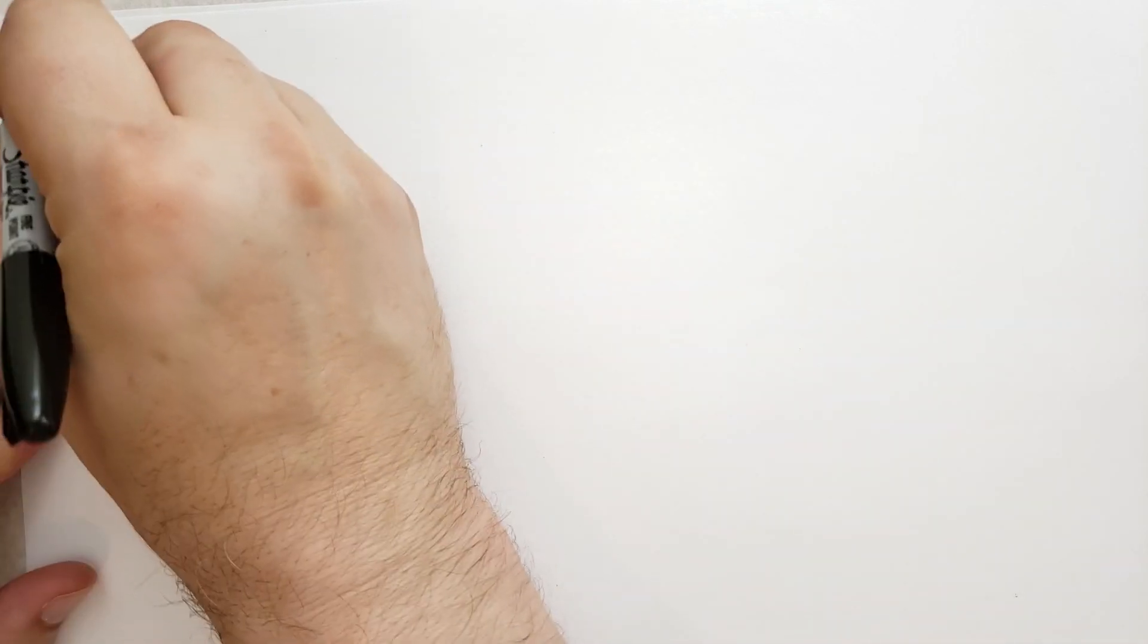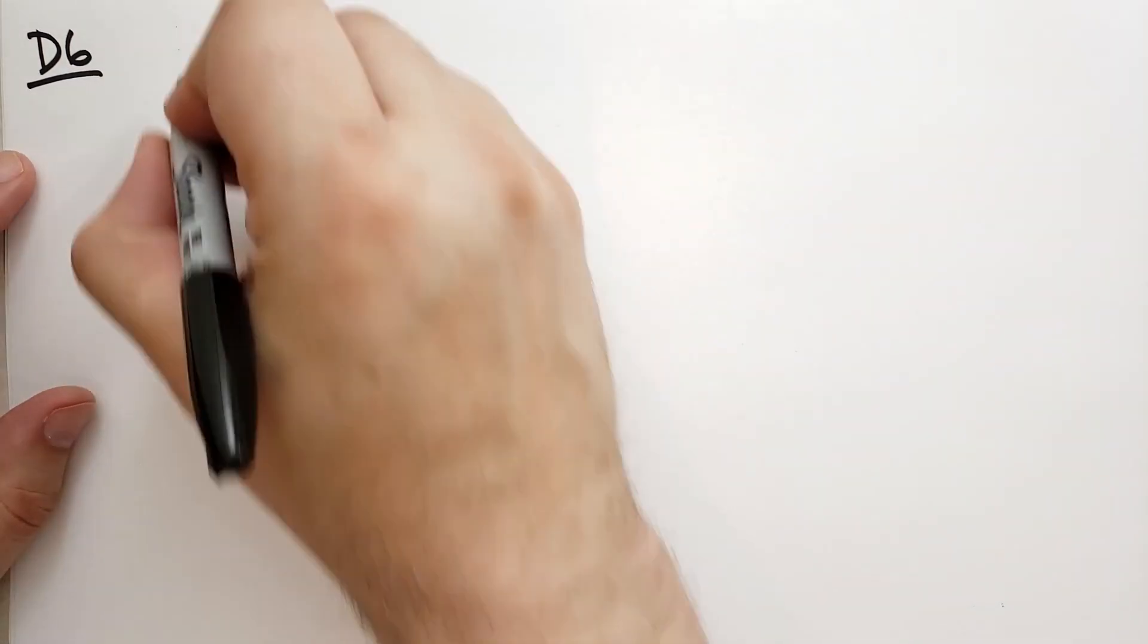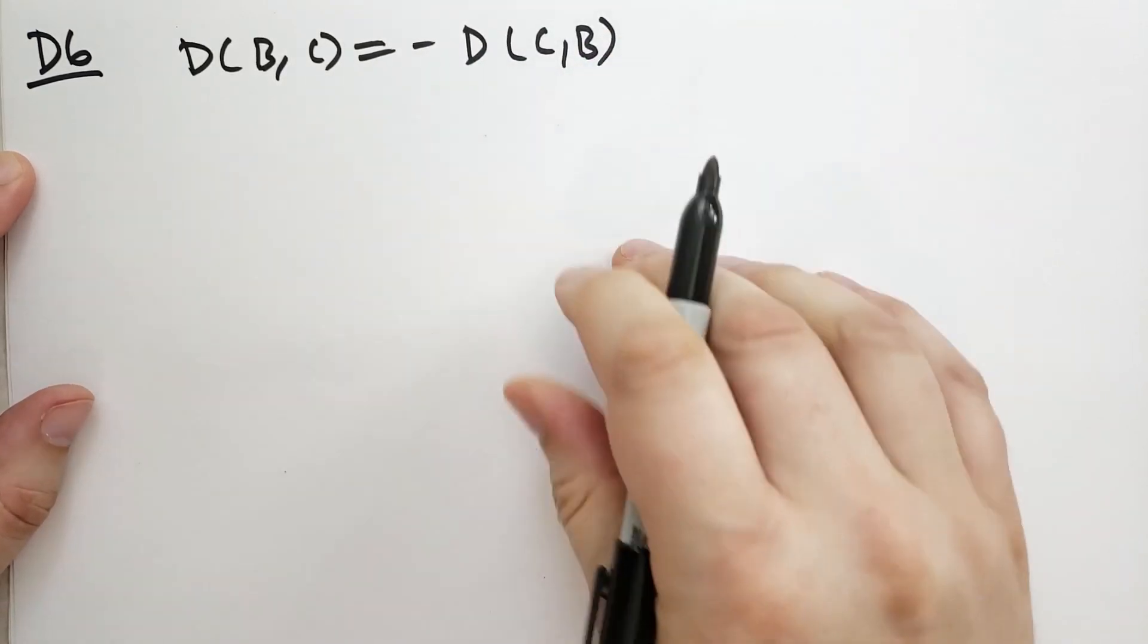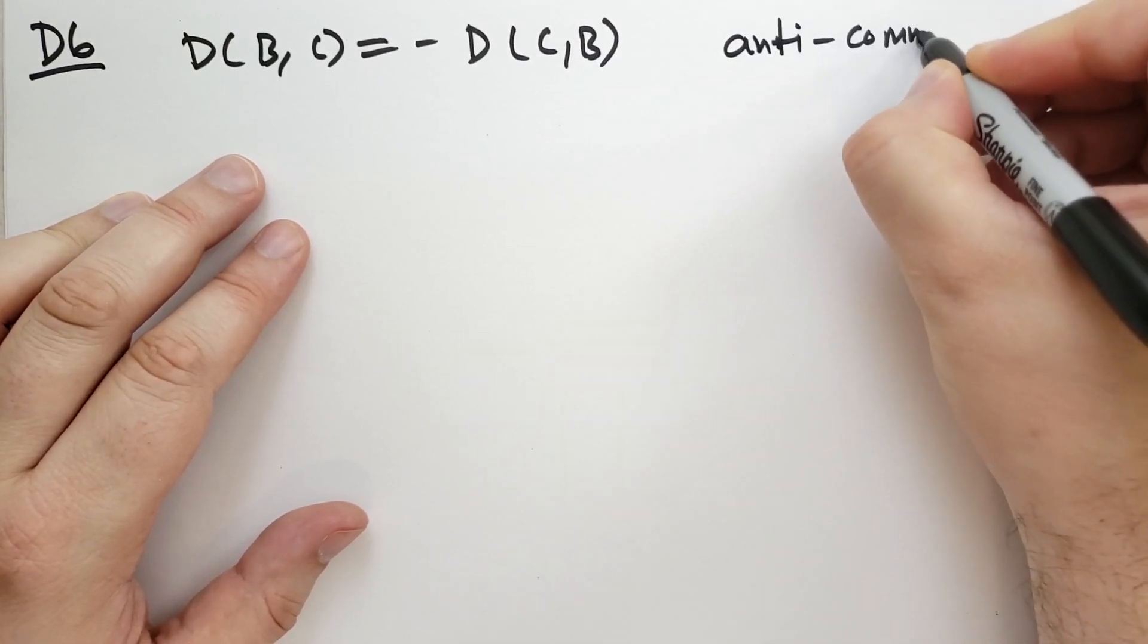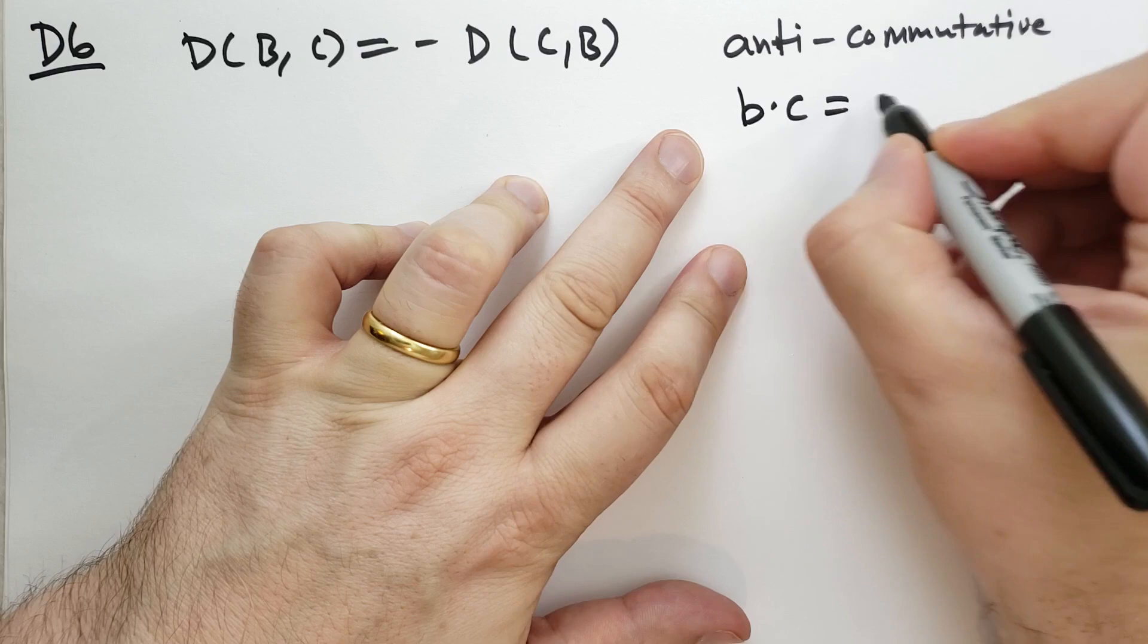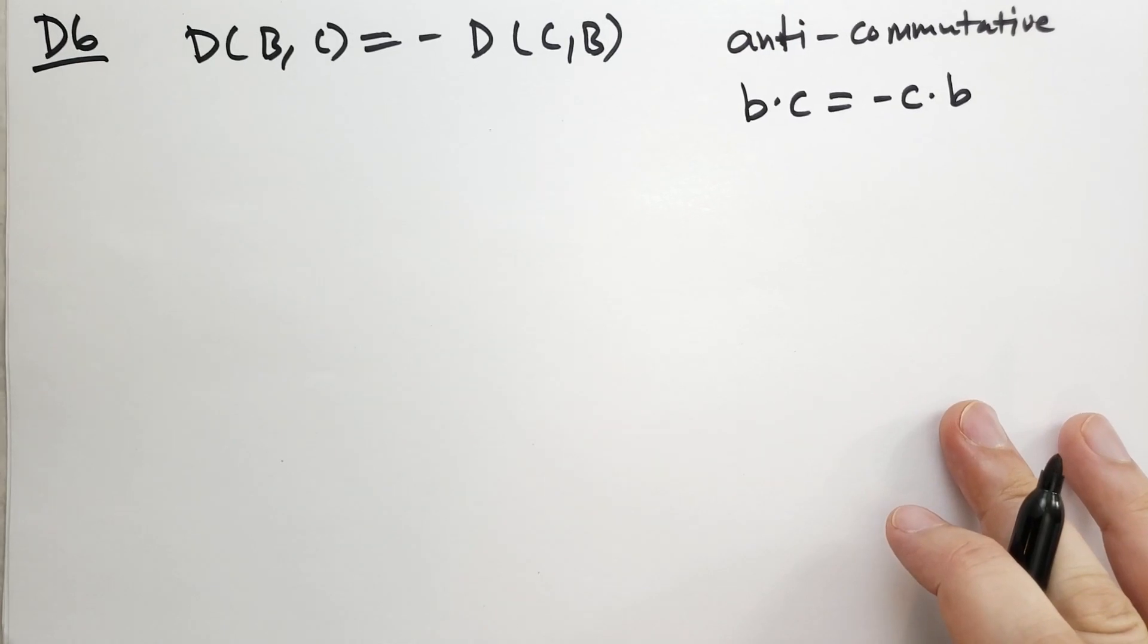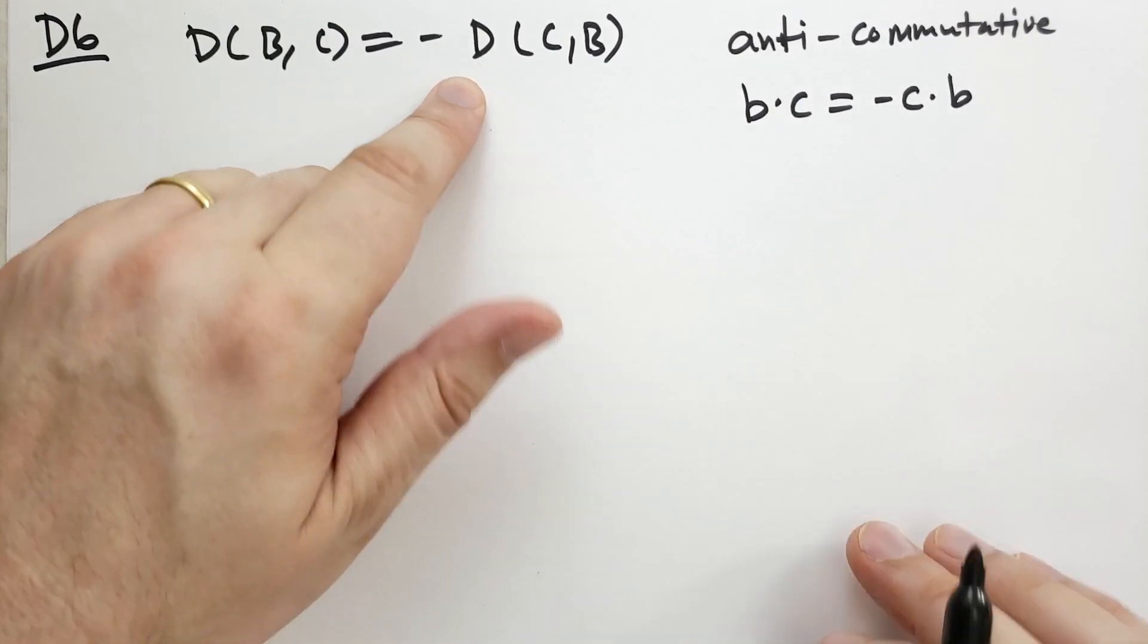So we're already kind of at a higher level now where we don't have to think like regular people about multiplying numbers together. We just do determinants and we just apply the properties and we can solve problems. D6. Hopefully this is getting exciting. This is always the exciting part of math for me is when I don't have to do math anymore. I can just use these little simple properties that I've learned. If two columns are interchanged, then the value of the determinant changes by a sign. So D6 says that if we take the determinant of B and C, that's going to equal minus the determinant of C comma B. And what this means is that determinants are anti-commutative.